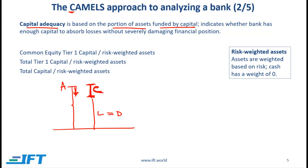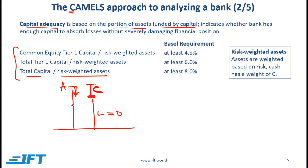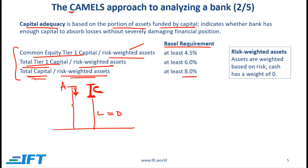Specifically, there are three important ratios under Basel III requirements. Total capital divided by risk-weighted assets must be at least 8%. Total tier one capital divided by risk-weighted assets should be at least 6%. Common equity tier one capital divided by risk-weighted assets should be at least 4.5%. The question then is: what is meant by risk-weighted assets, common equity tier one capital, total tier one capital, and total capital?